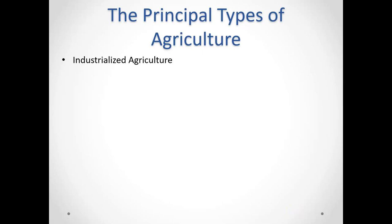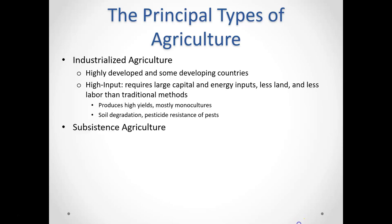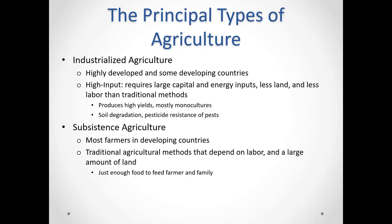So those are some world food problems: not enough food, too much food — under-nutrition and over-nutrition. Let's talk about different types of agriculture. Basically there are two types: industrialized agriculture and subsistence agriculture.